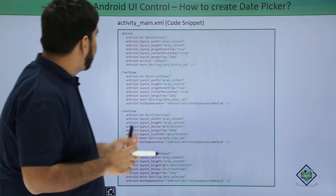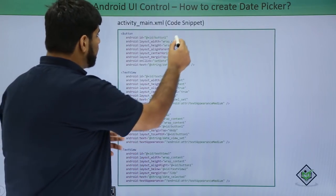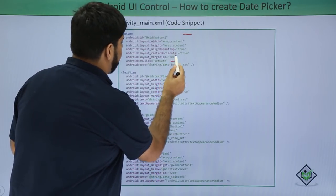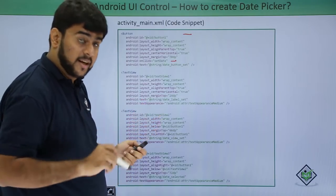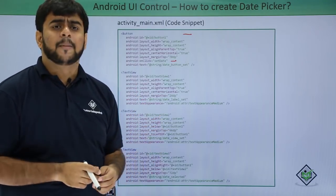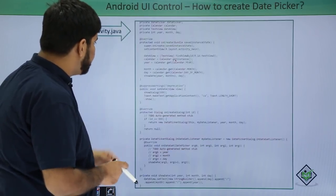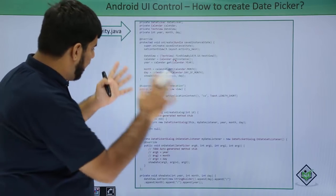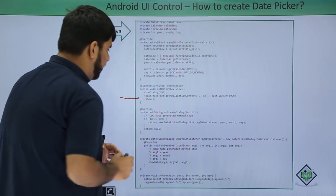Now let's look at activity_main.xml. Here I have a button, and on click of this button I am calling the setDate method. Remember this method carefully because you will be using it. When the user opens the application and clicks on the setDate button, it triggers the setDate method in MainActivity.java.